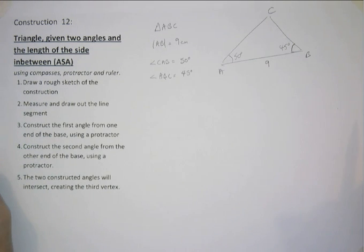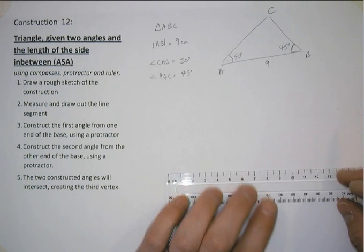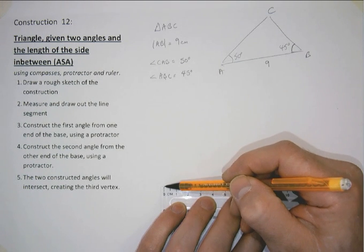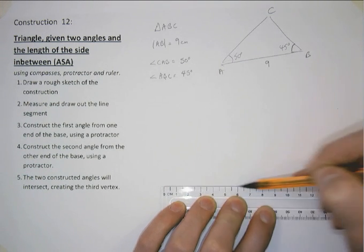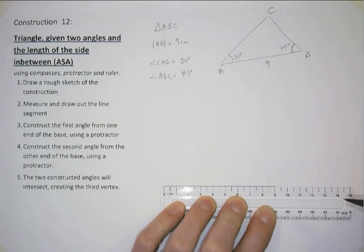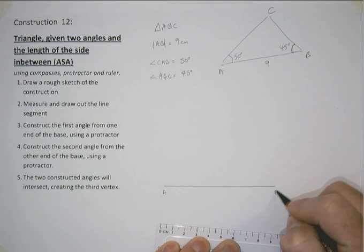So that's what we want to actually be able to create properly to scale. So the first thing we do is we're going to draw our line, our line AB. So with a ruler and a pencil, I'm going to draw a line that is of length 9cm. Let's label that up, A and B.